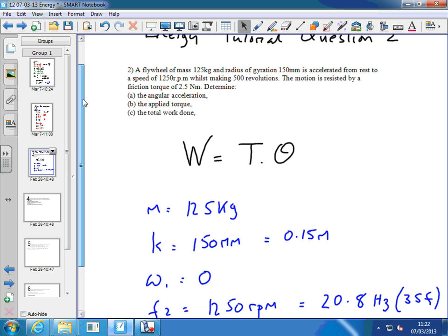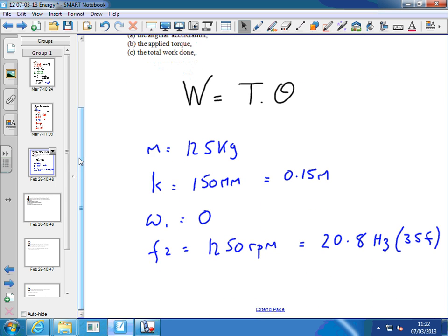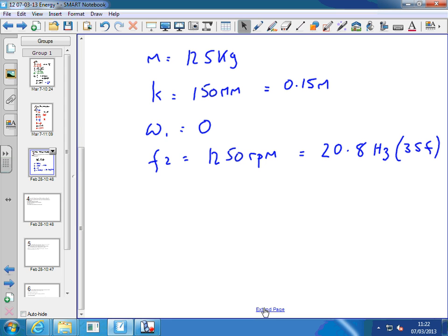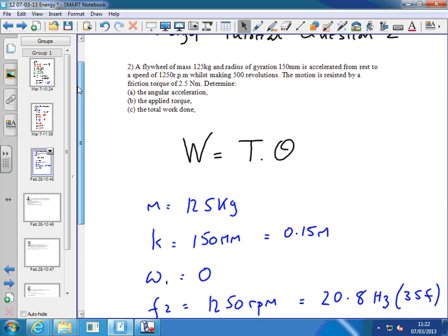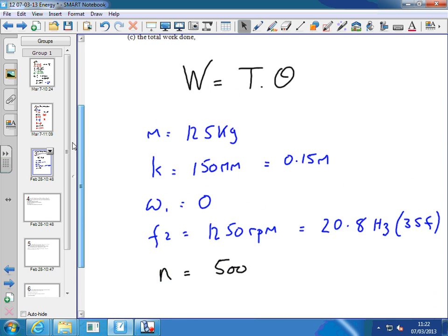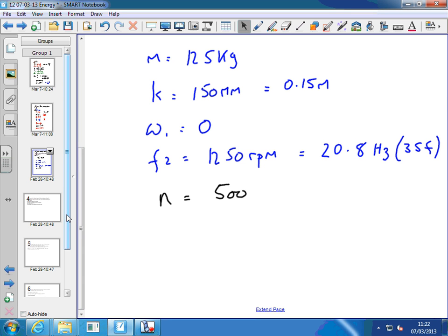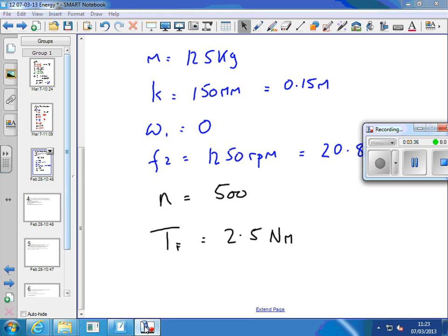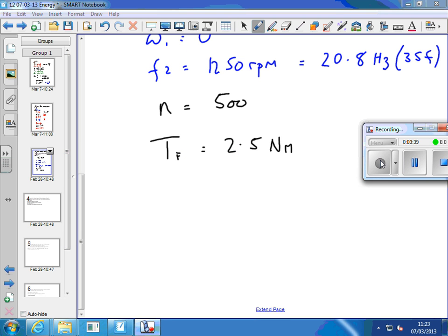What else are we given? We're given that it makes 500 revolutions. So the number of revolutions, N, the number of revolutions, 500. No unit associated with that, it's just the number of revolutions. The motion is resisted by a friction torque of 2.5 newton meters. So I also know that the friction torque is 2.5 newton meters.